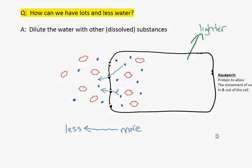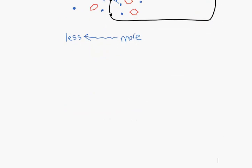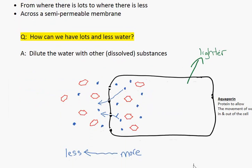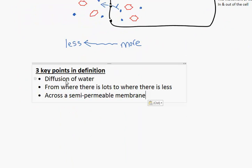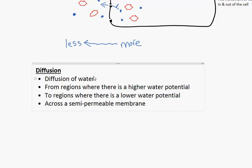Finally, we need to tidy up our definition. We can't really be talking, as we did at the start, with where there is lots to where there is less. We can make a good definition that will hold up. There is a diffusion of water from regions where there is a higher water potential to regions where there is a lower water potential. Water diffuses passively from where there is lots to less. High water potential to low water potential across a semi-permeable membrane.